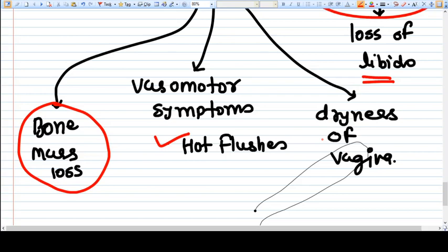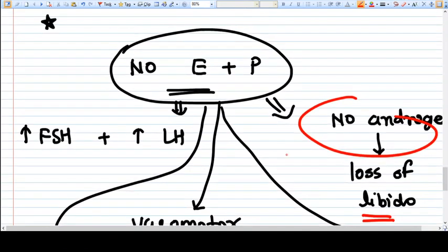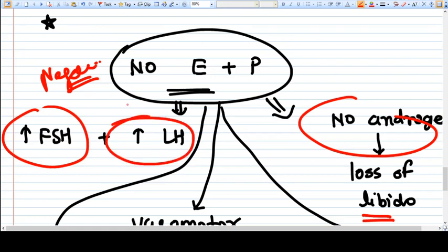Estrogen and progesterone are responsible for the vagina, mainly estrogen. The vaginal epithelium and the acidic environment because of estrogen is lost. There is dryness of vagina. All these symptoms make the menopause. If there is no estrogen and progesterone, then there is loss of negative feedback to the pituitary for FSH and LH.